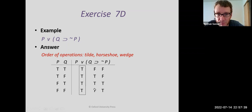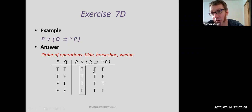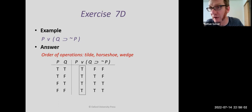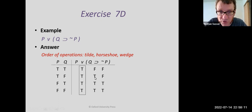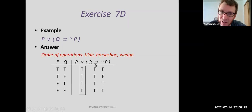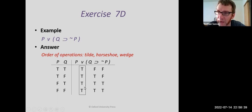Now we determine the horseshoe. Line one: Q is true but not-P is false — the horseshoe is false. If you're unsure why, go back and look at the truth table definition of the horseshoe. Line two: Q is false, so the antecedent is false — without even looking at the consequent, the horseshoe is true, because whenever the antecedent is false, the horseshoe is true. Line three: Q is true and not-P is true — true-true is true with the horseshoe. Line four: Q is false, so automatically the horseshoe is true. Now I have the truth value of the entire compound statement inside the parentheses, and I already have the truth value of P, so I can determine the wedge.